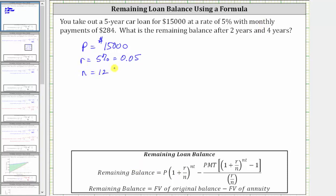The monthly payments are $284, and therefore PMT in the annuity part of the formula is equal to $284. Because we want the remaining balance after two years and four years, we will first have T, time in years, equal to two, and then T equals four.